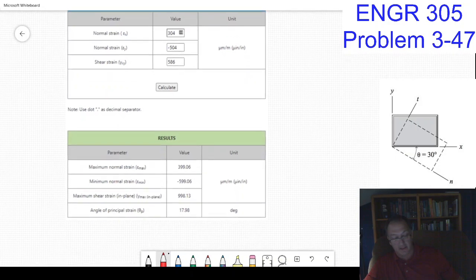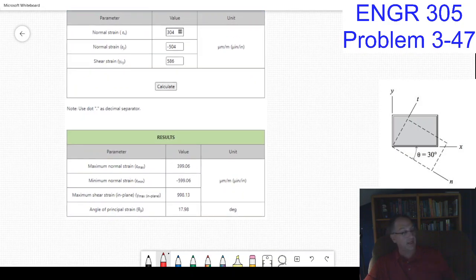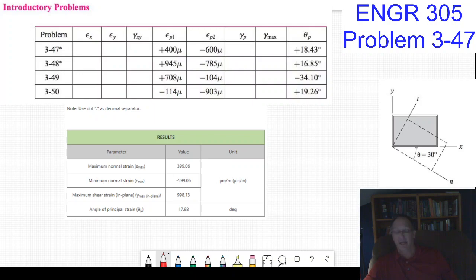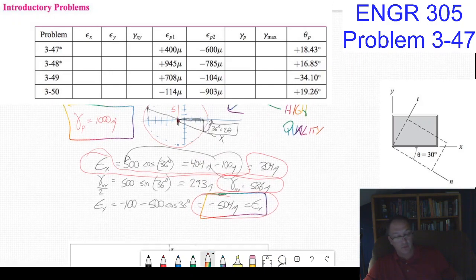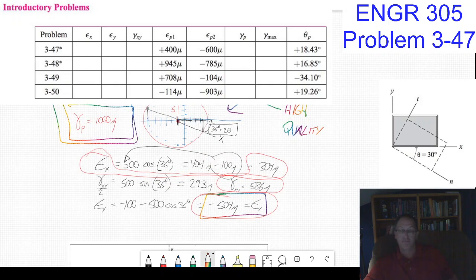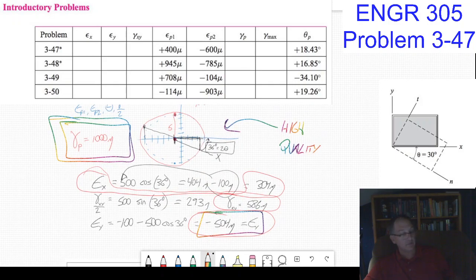It comes back with the normal strain. I can pull up my problem statement—I had 400 in the x, which is what I had, negative 600 in the y, that's what I have, and a principal strain angle of 17.98. That's because I was working with 18 because I dropped 0.4, so a little sloppiness on my part. The maximum in-plane shear is 1000, and that's what we got, that's the golden box up there.